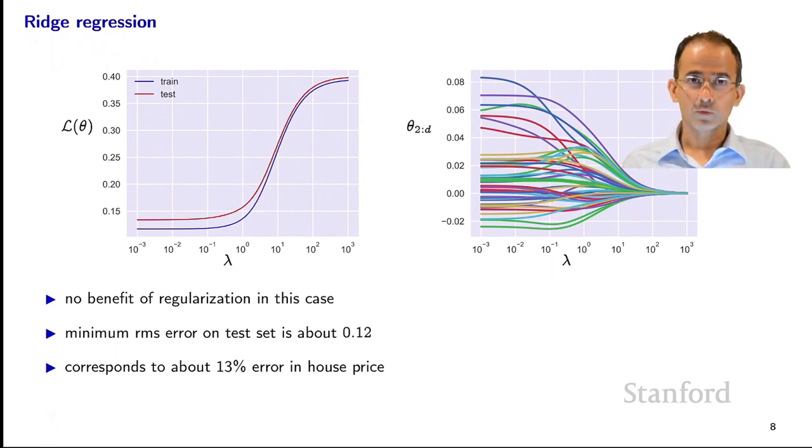Over here on the right, we have the plot of Theta versus Lambda, the regularization path. We can see that even with Lambda about 0.1, we're starting to see some shrinkage. The components of Theta are getting smaller without any loss in performance. So the reasonable choice of Lambda would be something of that order somewhere between 0.1 and 1.